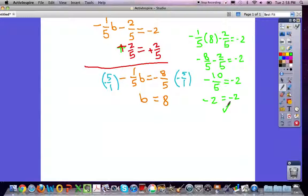So as you can see, b equals 8 is the correct answer. And when you put 8 into b, that equals negative 2.